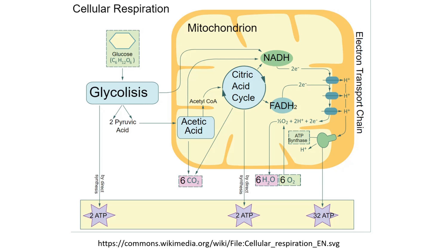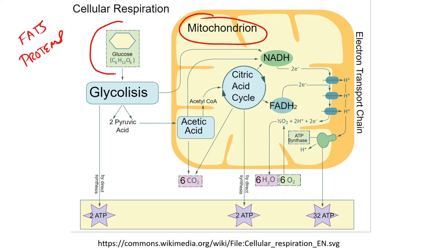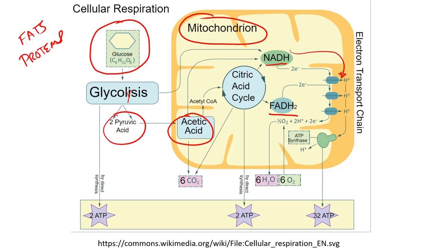This looks like a really busy slide, but bear with me. Here we have the mitochondria. There are fats and proteins, but we're going to talk about sugar — and that's glucose right there. Glucose is broken down in the cell to different intermediates, and it basically goes through the mitochondrion through something called the citric acid cycle, making reducing agents, and then it goes to this part of the mitochondrion. What comes out is ATP.